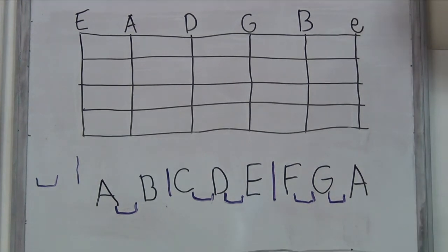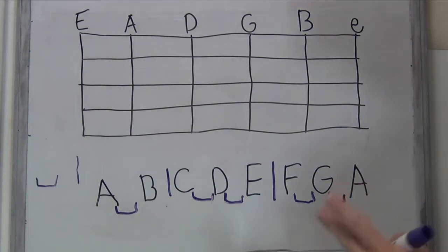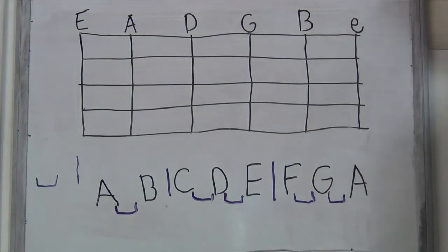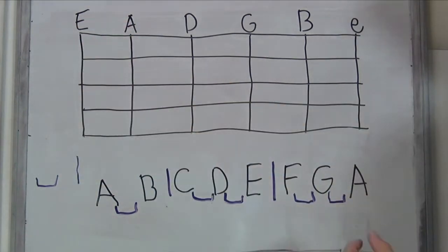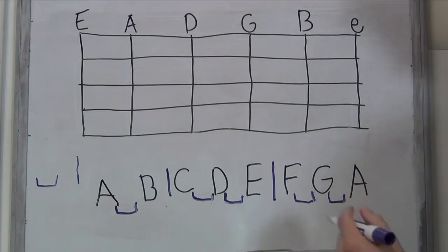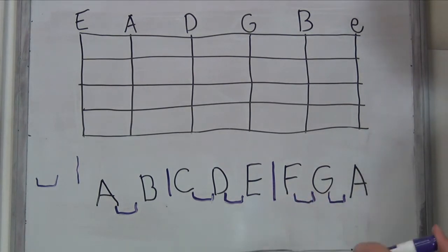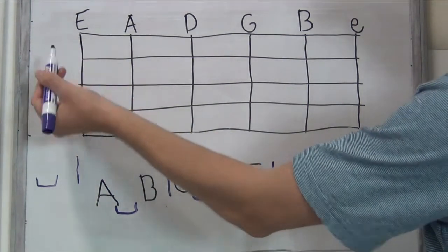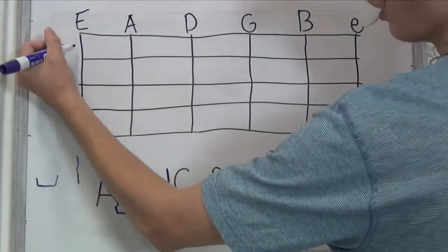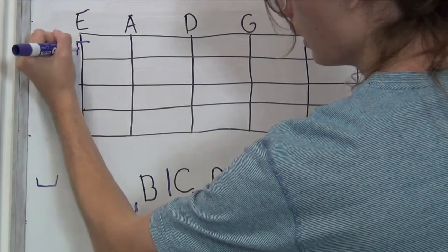So now let's see how these work on the guitar. There's only two things we need to memorize: there's a half step between B and C, and a half step between E and F. Let's start with E. This is our low E string on the guitar. The distance between E and F is a half step, which means that it's the smallest distance that you can go on the guitar — that's one fret away. If E is our open string, then our F is right there.